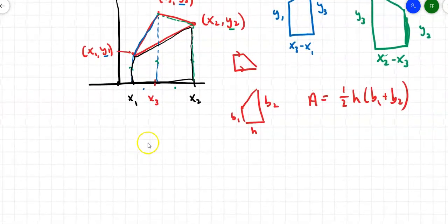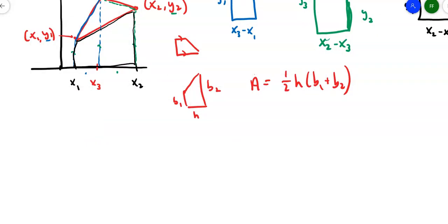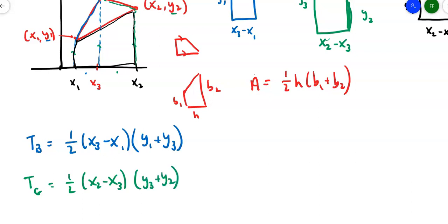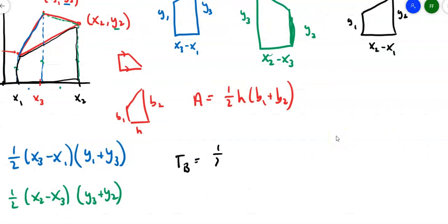So let's take a look at our three trapezoids. Let's organize the work under here. For the blue trapezoid, we'll get one half the height, which is x3 minus x1, times the sum of the bases, which is y1 plus y3. For the green trapezoid, we'll get one half the height, which is x2 minus x3, times the sum of the bases, which is y3 plus y2. And then the black trapezoid, the one that's going to be subtracted from those two, is up in the corner over there. So it's going to be one half the height, which is x2 minus x1, times the sum of the bases, which is y1 plus y2.